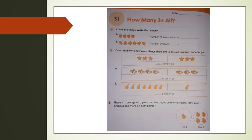Take your workbook page number 22. Write the date on the top. Question number 1, count the things, write the number. You have to count and write the number. Question number 2, count and write how many things there are in all. First one is done for you.